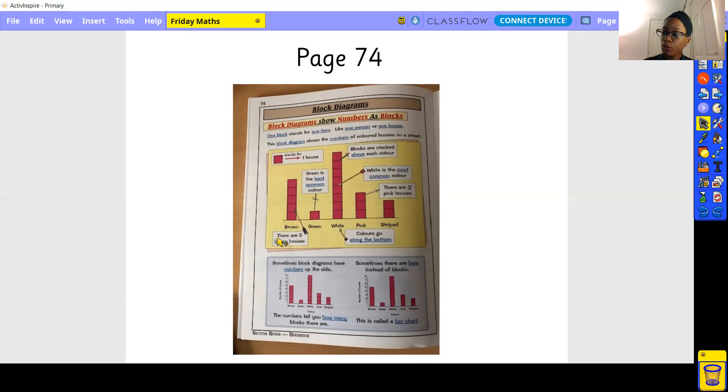And the block diagram itself shows the numbers of different colored houses on a street. Then further down here, we can see block diagrams sometimes have numbers at the side. Okay, going up, you can see the number of houses I mentioned, you can see the numbers this time as well. And along the bottom, you can see we've got the color and again it's labeled.